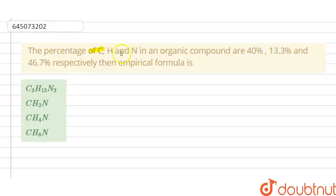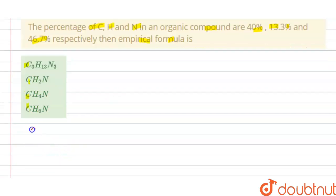The percentage of C (carbon), H (hydrogen), N (nitrogen) in an organic compound are 40%, 13.3%, and 46.7% respectively. Then the empirical formula is - options A, B, C, D are given here, so we have to choose the correct option.